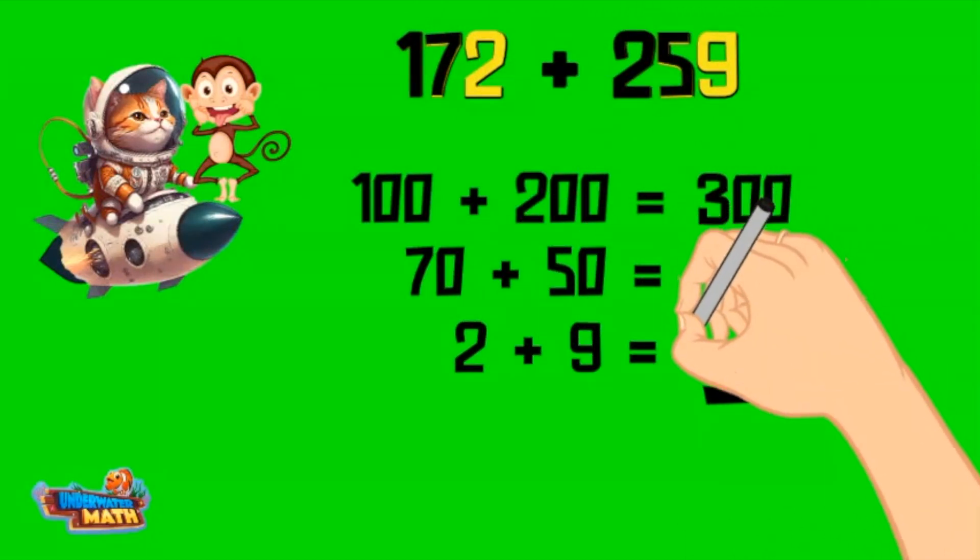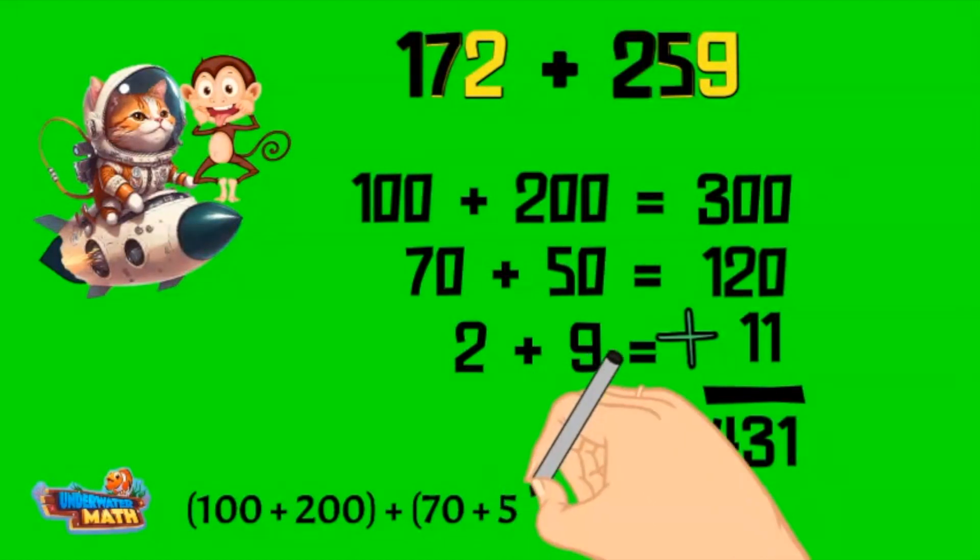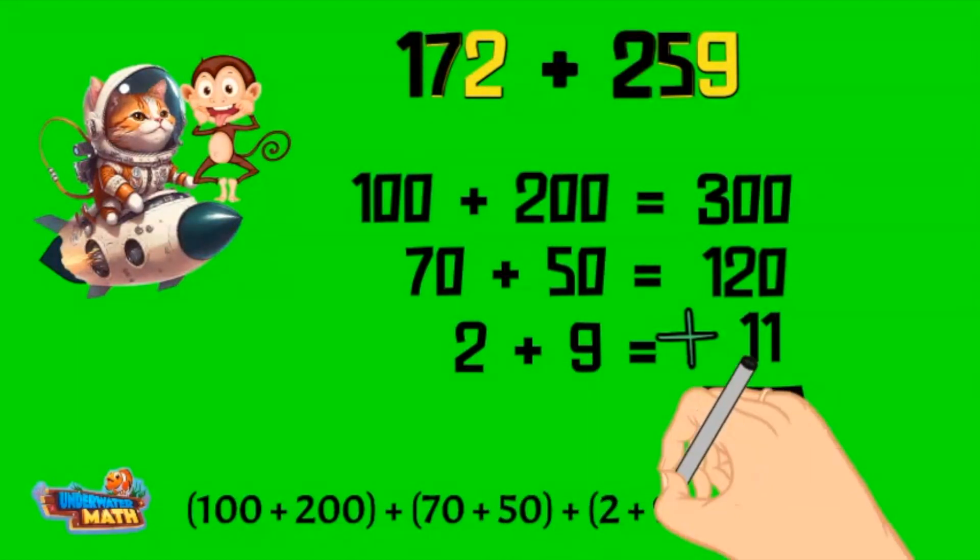I find the total by adding all the sums together for a grand total of 431. The equation will look like this: 100 plus 200 plus 70 plus 50 plus 2 plus 9 equals 431.